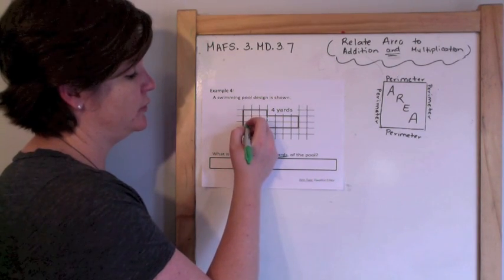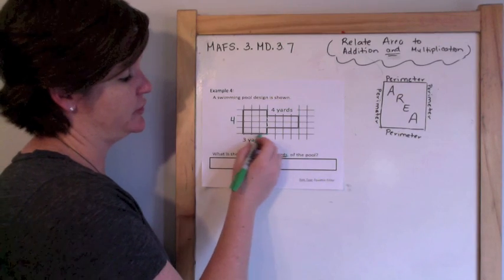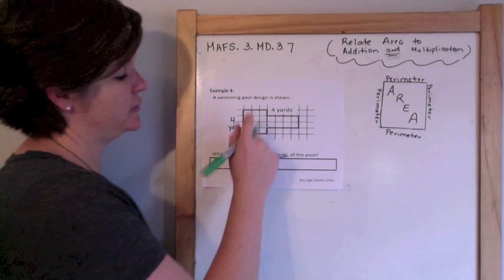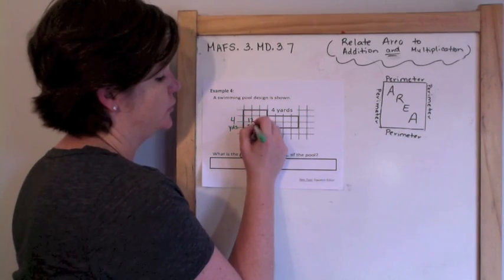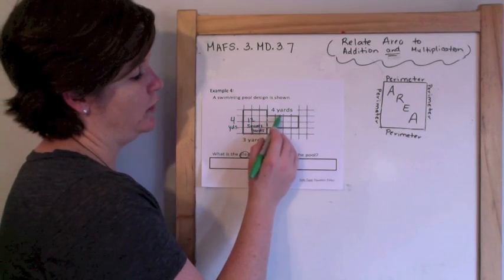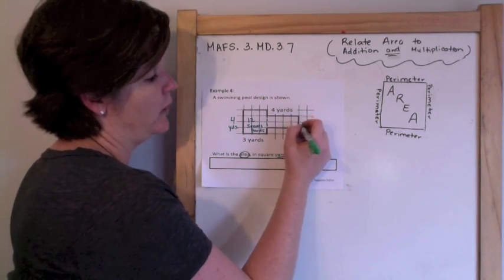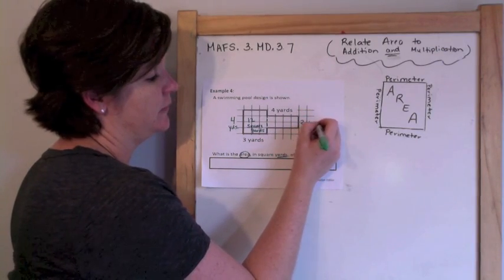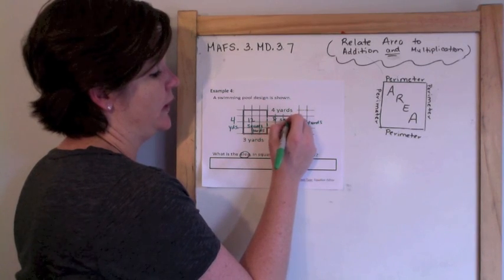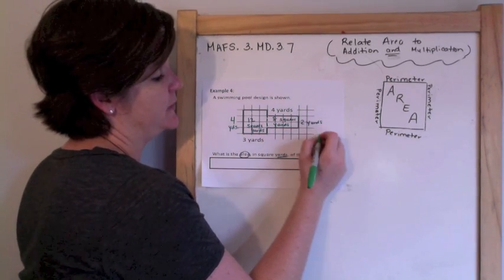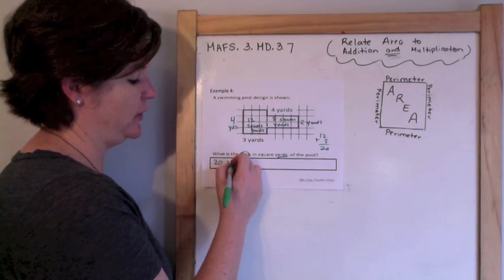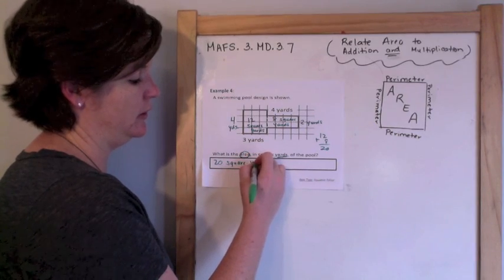I see two different rectangular figures. Here I've got 4 yards by 3 yards, so 4 times 3 is 12 square yards. Then here I have 4 yards by 2 yards, so 4 times 2 is 8 square yards. I add them together: 12 plus 8 is 20. The total area is 20 — don't forget your unit — square yards.